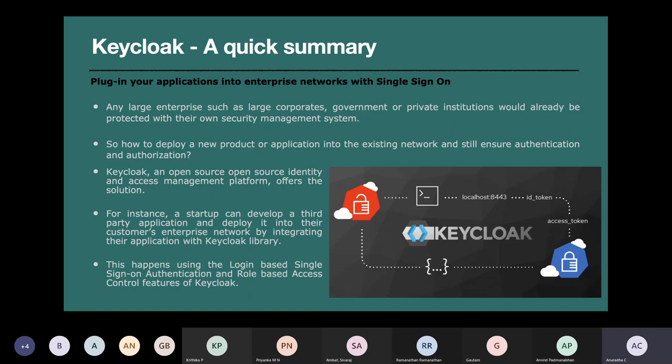As you can see in the picture, there is a redirect URL. There are two things to note. When your application is trying to log in using a username and password, you redirect it to a Keycloak server. Keycloak will give you back some ID access tokens, and using those tokens you can bypass the security system of the existing enterprise network. The idea of single sign-on is not directly implemented using username and password as it is — it can be OTP, fingerprint, anything.